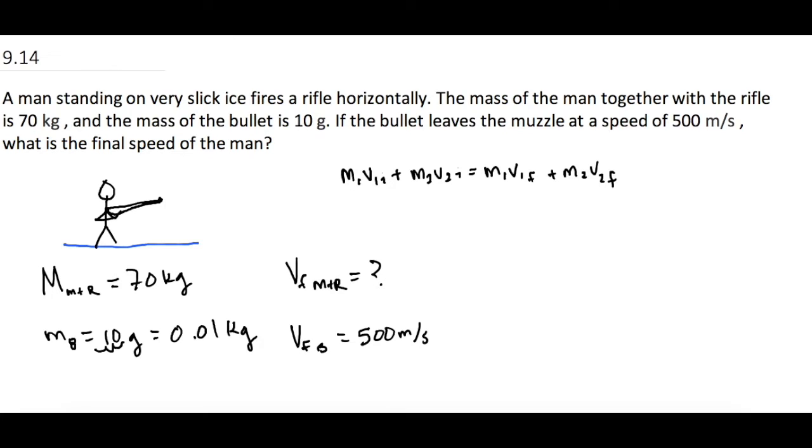So now let's rearrange this for what we're looking for. Let's say the mass and velocity of the guy is number one, and the mass and velocity of the bullet is number two. So we're looking for this final velocity right here.